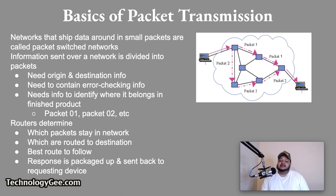The destination information in the packets enables the routers to determine where the packets are going. As the packets travel, they are intermingled with many other packets going to many other destinations. When the packets reach the destination, the information contained in each packet enables the destination device to reassemble the information in the correct order so it can be acted upon — meaning to send a web page, download a file, etc. The response is packetized and sent back to the requesting device in a similar fashion.